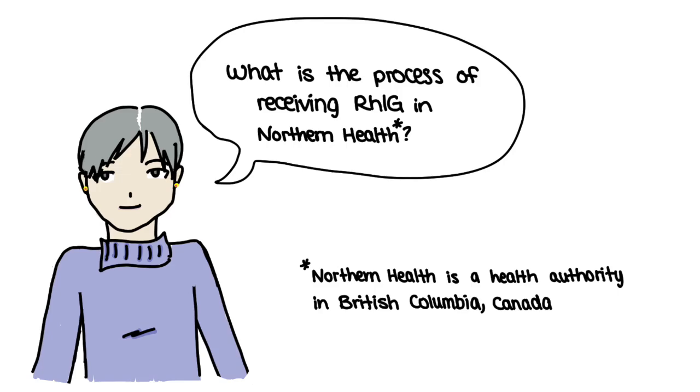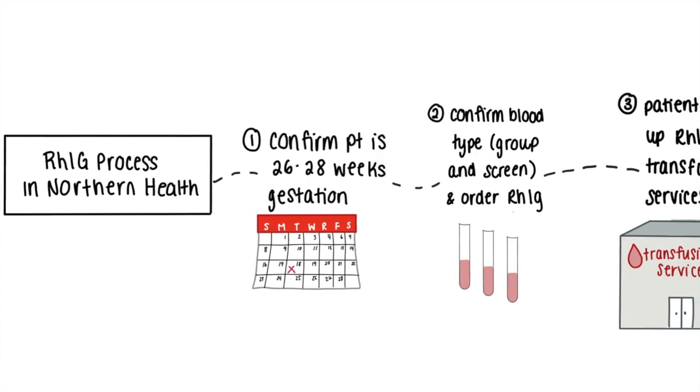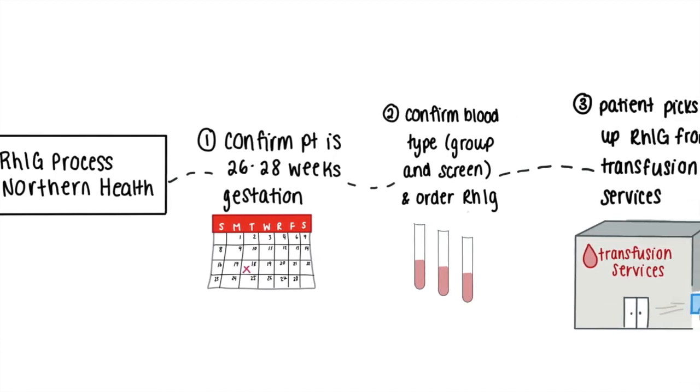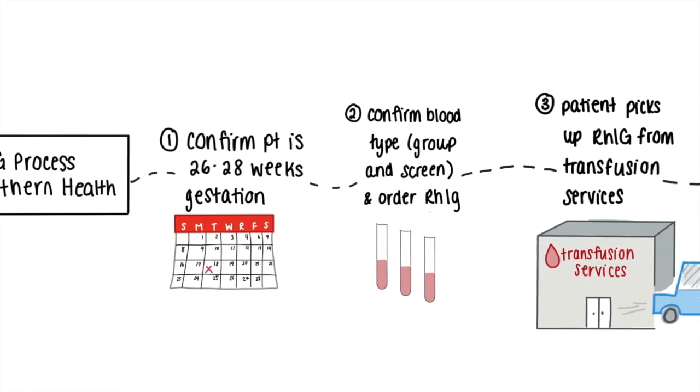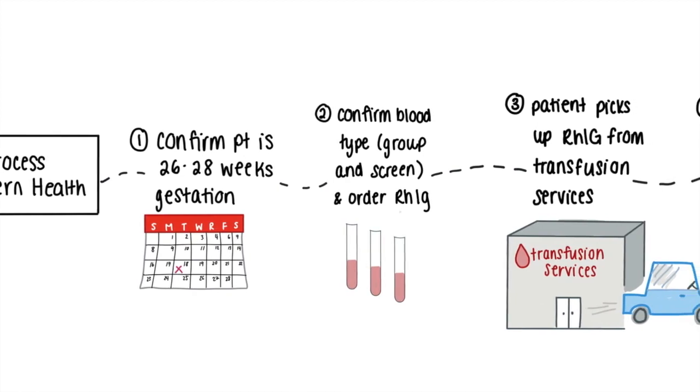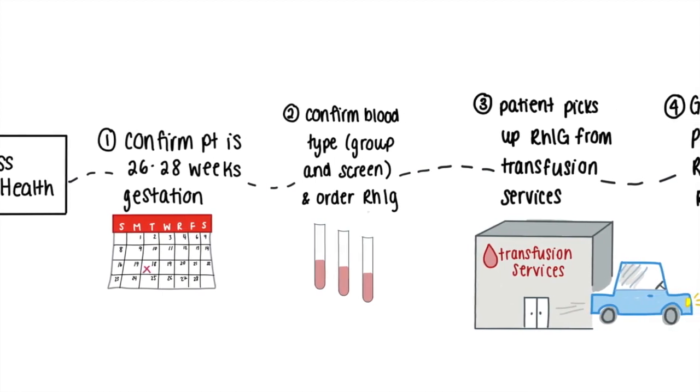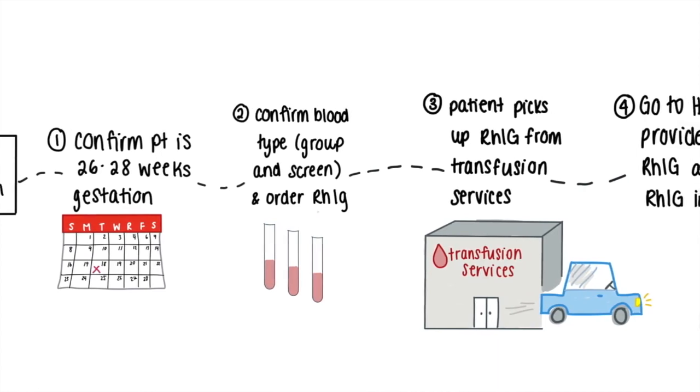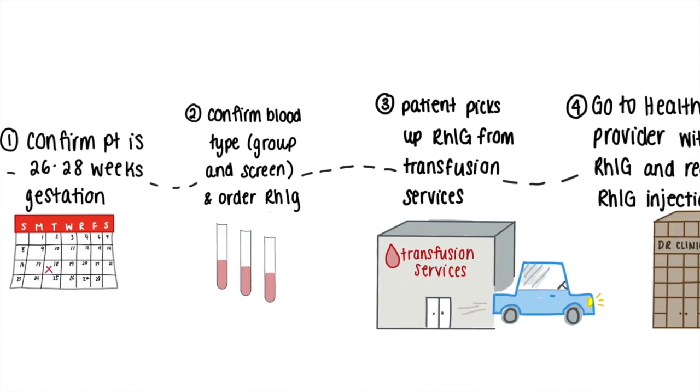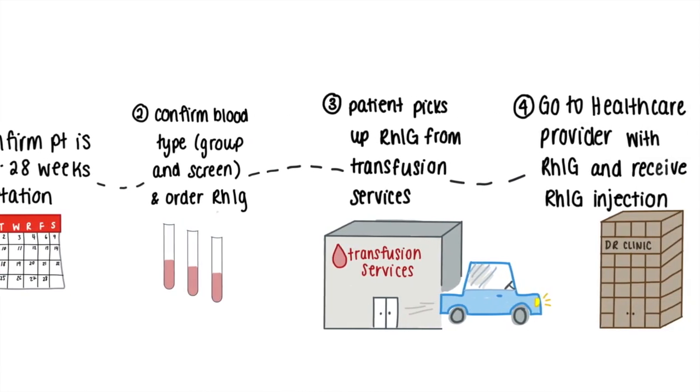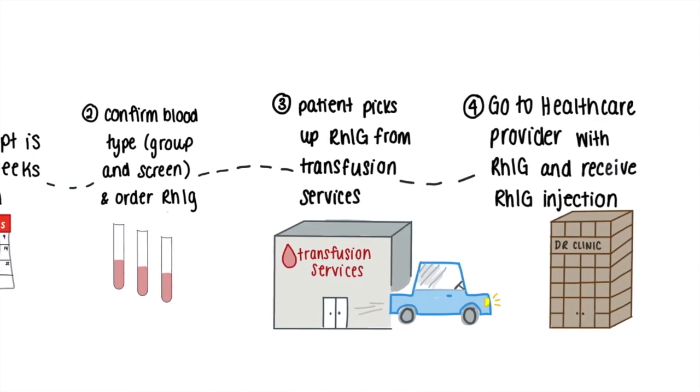How does the process of receiving RHIG work in Northern Health? First, your healthcare provider will confirm that you are 26 to 28 weeks pregnant. Following this, you will be sent to a lab where a sample of your blood will be taken to confirm your blood type. You will then be asked to visit transfusion services to pick up your RHIG and take this RHIG to your main pregnancy care provider so that they can administer the injection.